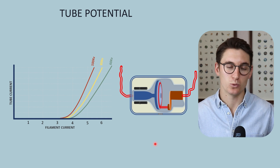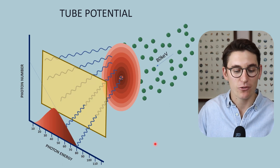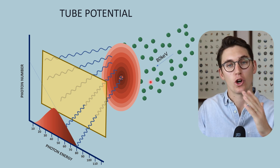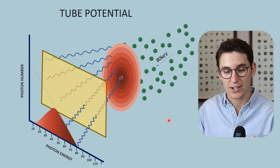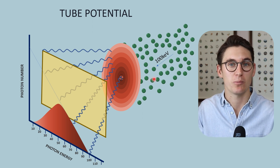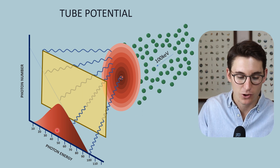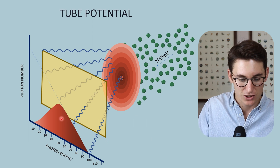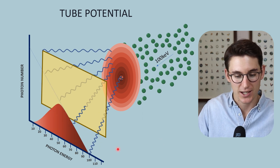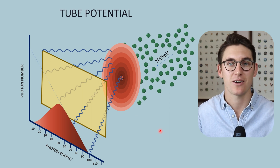So increasing our tube potential will increase the area under the curve of our x-ray beam quantity. Now what does it do to our x-ray beam quality — the average energy? If we have a tube potential of 80 keV and increase it, there will be more electrons, increasing our x-ray beam quantity, but those electrons will also have a higher energy. Our x-ray spectrum shifts to the right — we've increased the average photon energy. So not only does tube potential increase our x-ray beam quantity, it also increases our x-ray beam quality.